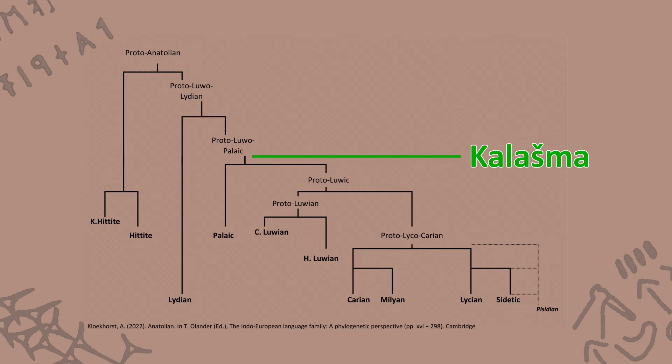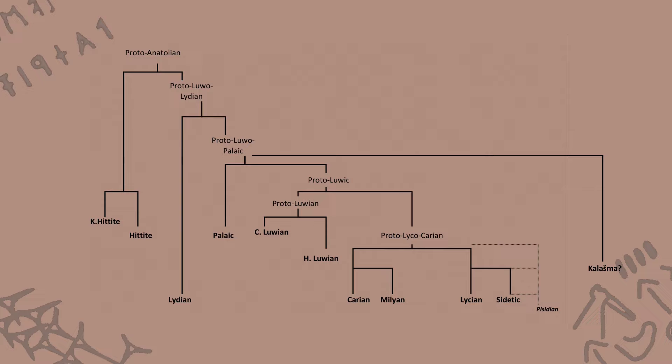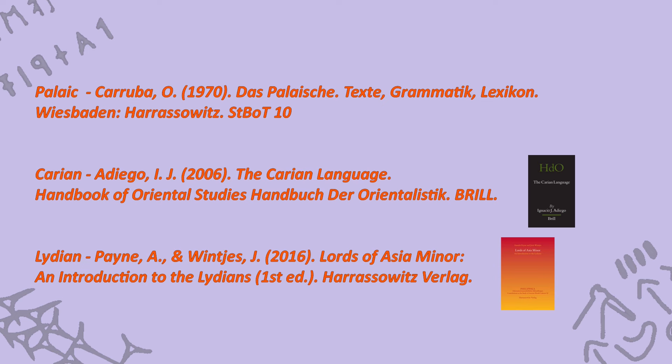And so what we have on the screen here would be our best understanding of the Anatolian language tree as of early 2024. I've mentioned two books useful for getting into Anatolian studies, and here on screen I'm presenting some of the key works connected to some of the other branches. That's all from me for today. I do hope you found something informative and interesting in this video about the Anatolian language family. I'll be back very soon with another one. This is Learn Hittite — drop me a like and a subscribe if you like this sort of content. Goodbye for now.